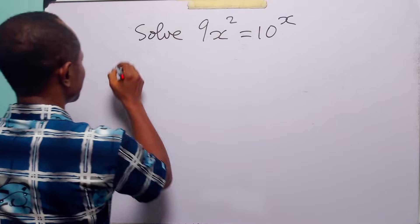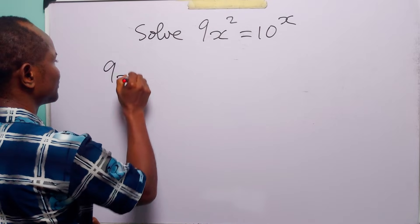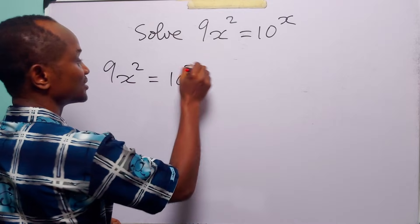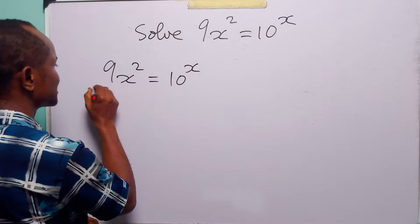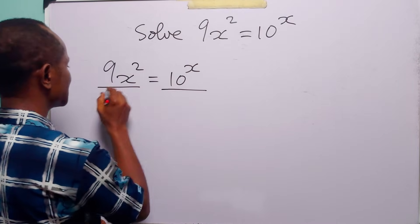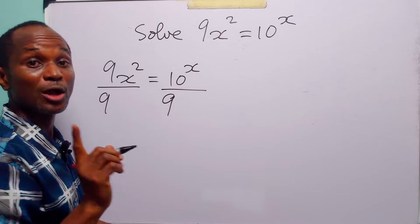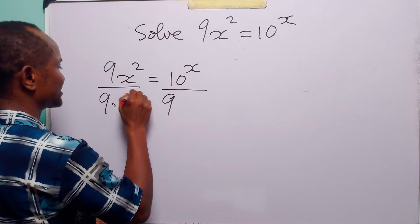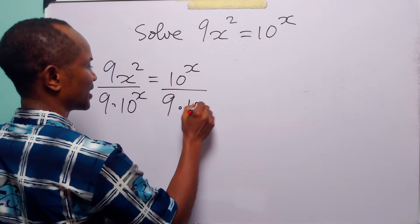Now, we have that 9x squared is equal to 10 to the power x. The first thing we are going to do is divide both sides of this equation by 9. We are also going to divide both sides of the equation by 10 to the power x.